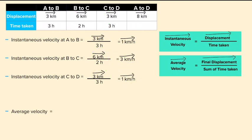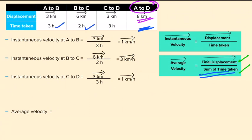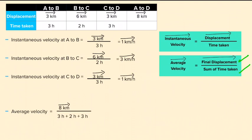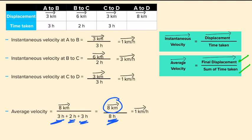Now find the average velocity. Average velocity is final displacement divided by sum of time taken. From the table, the displacement from A to D is 8 kilometers. For sum of time taken: A to B took 3 hours, B to C took 2 hours, and C to D took 3 hours — total 8 hours. So average velocity is 8 km divided by 8 hours, which equals 1 kilometer per hour. We put an arrow on top. This is the average velocity of Arpit.